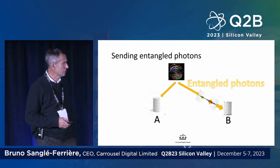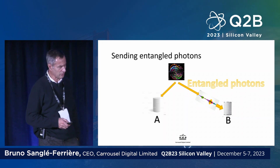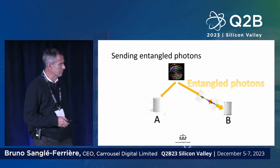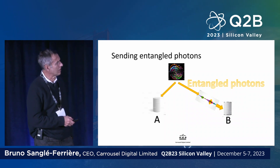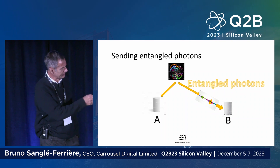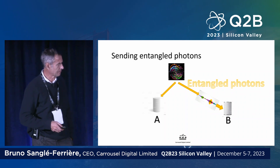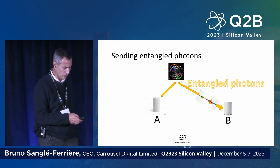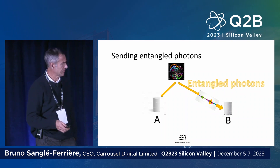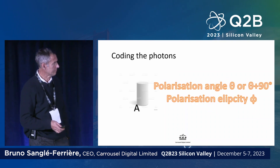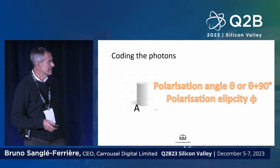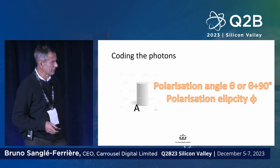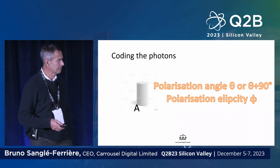A is a bit closer to the photon emitter than B, including the little device which is a photon demultiplier. The information will be transmitted from A to B.